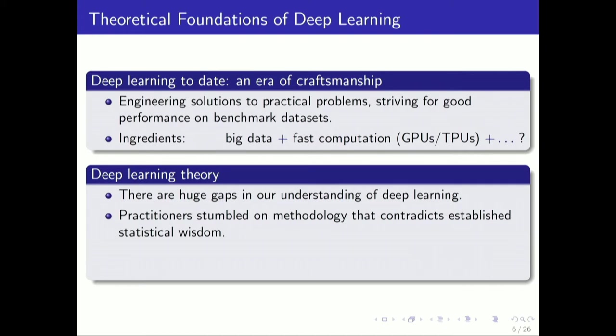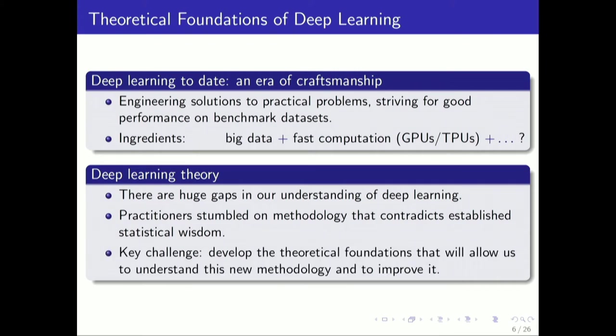I think the situation currently is that practitioners have stumbled on this methodology that's hugely successful, but actually contradicts established statistical wisdom in some pretty precise and quantifiable ways. We'll talk a little bit about that. Of course, this is a really important challenge, developing this rigorous understanding of these methods that will allow us to improve it. Perhaps I don't see any fundamental reason why deep neural nets are the only technology that could be as successful on these sort of problems.